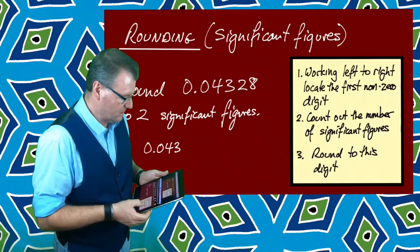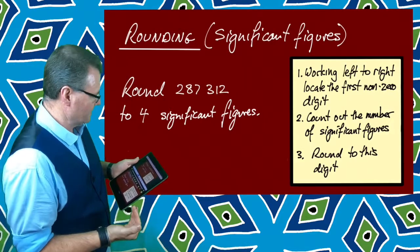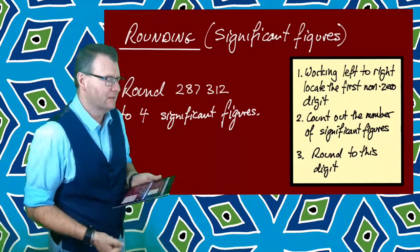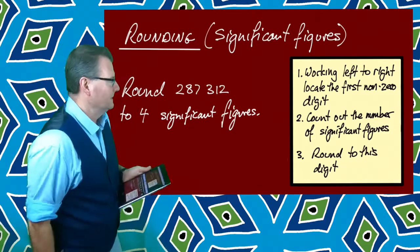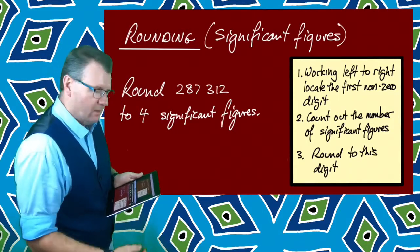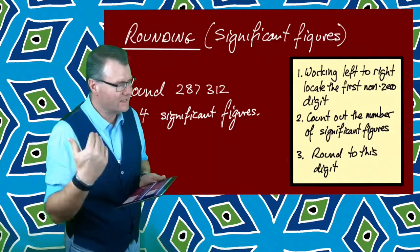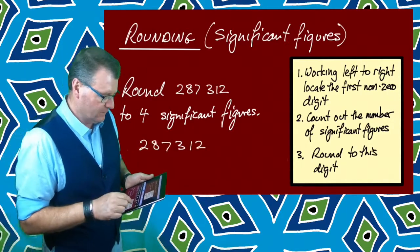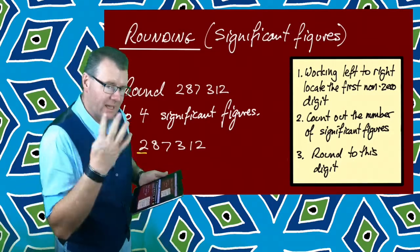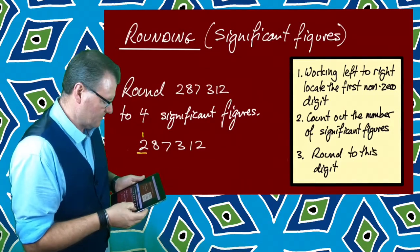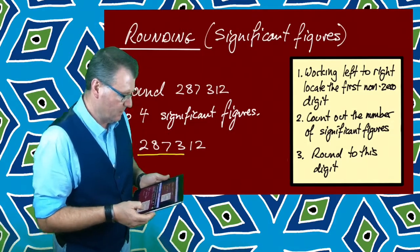There are a couple of other tricky types of questions. What about something like this? 287,312, but this time rounded to four significant figures. Follow the same process. Start at the left, come in until you hit your first non-zero number, which is that one. I'm going to count out four significant figures - one, two, three, four. So I'm going to be keeping those.